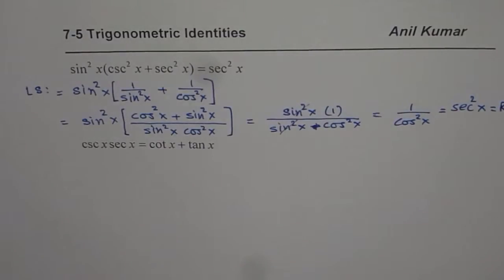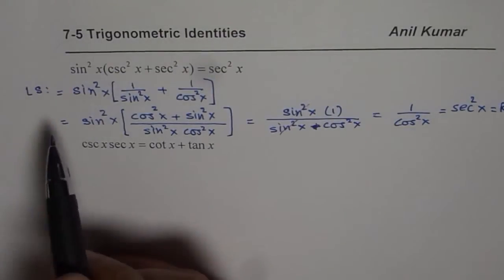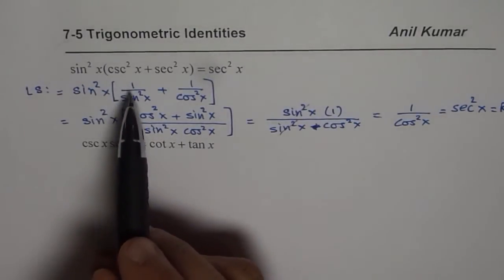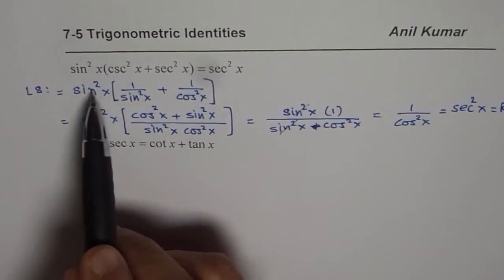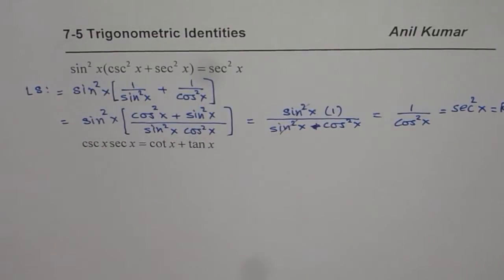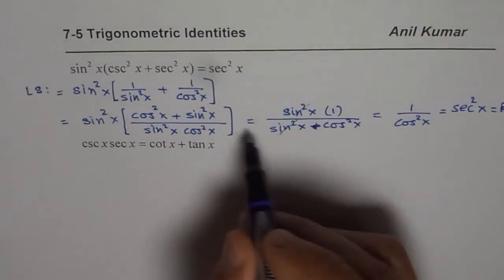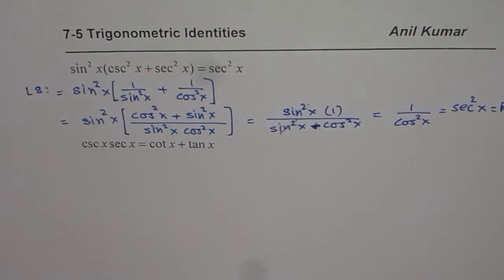So that is how you can prove the trigonometric identity. Now there is an alternate way also to do it, and that is at this particular stage you could actually expand and get to the right side.